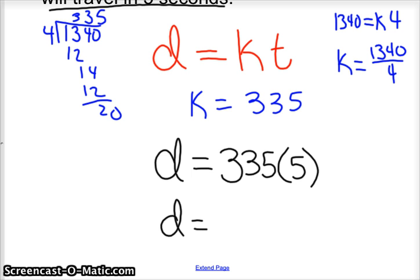So 5 times 5 is 25, carry the 2, 15, 17, so 1,675. It travels 1,675 meters, which makes sense. It's just one more time than 4 seconds, one more 335. And that's directly proportional.